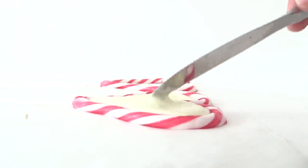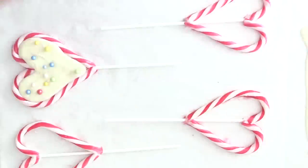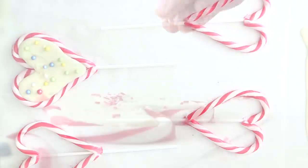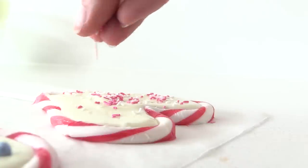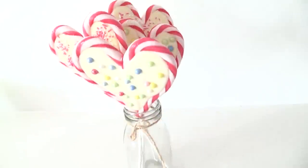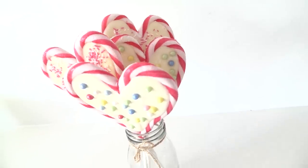Once you are happy with the shapes of your hearts you can leave those to cool and go firm again. And then you simply fill each heart with some tempered white chocolate and then sprinkle it with the decorations of your choice before that chocolate sets. And then you could wrap those individually in cellophane or if you want to serve them at an event just put them into a little jar that you can serve them in.